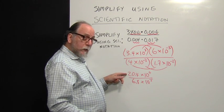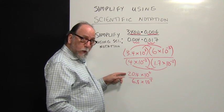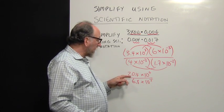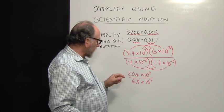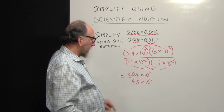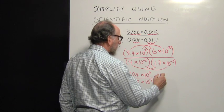Now, the top number here is not in scientific notation. Do you remember why? It's because 20.4 is bigger than 10. But we're not going to worry about that because we're going to divide first. So take your calculator and divide 20.4 by 6.8. You should find that that is 3.